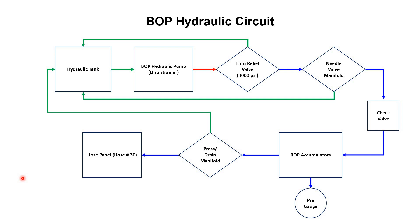That was our BOP circuit, discussed in much detail. To summarize: the hydraulic circuit starts from the hydraulic tank; hydraulic oil comes to the double vane pump through the strainer; with the help of a relief valve, 3000 psi is maintained; with the help of the needle valve we can control the BOP circuit — closed position sends pressure to the main circuit, open position sends it back to the tank; then through the check valve, pressure comes to the accumulators; from the accumulators we have a pressure and drain manifold, and ultimately pressure comes to the hose panel at hose number 36. That is all the discussion about the BOP hydraulic circuit present in the power pack hydraulic model open loop circuit. If you have any questions you can ask in the comment box. Thank you very much, see you in the next tutorial.